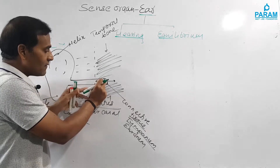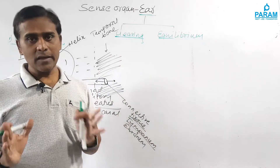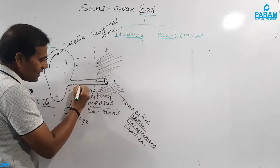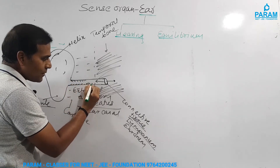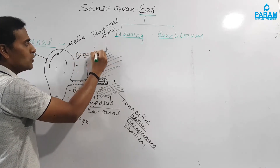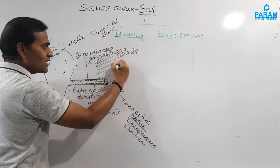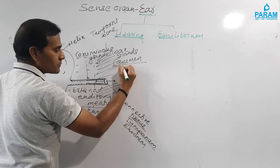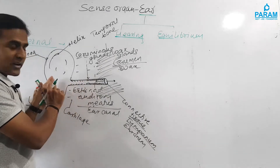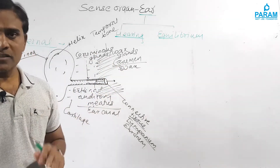The tympanic membrane is stretched because it needs to vibrate once sound waves are collected by the pinna, enter through the external auditory meatus, and strike the eardrum. These vibrations are then forwarded to the ear ossicles present in the middle ear. Inside the ear canal there is a presence of hairs and glands called ceruminous glands, or wax glands, whose secretion is called cerumen or wax. The function of cerumen and hair is to trap foreign particles entering the ear.